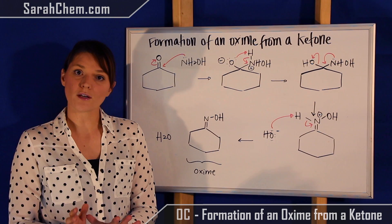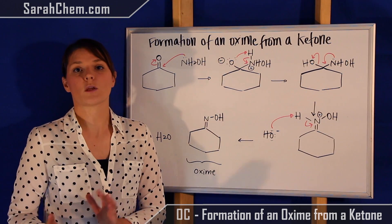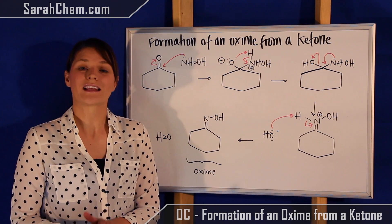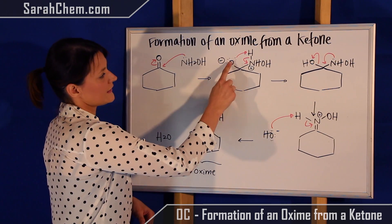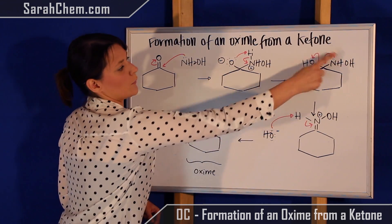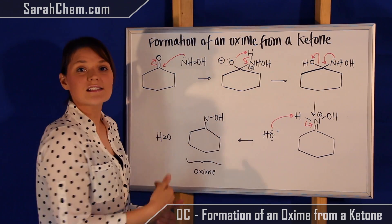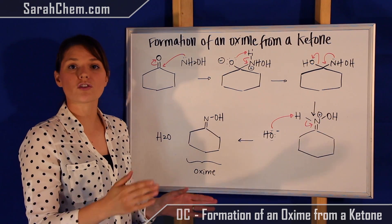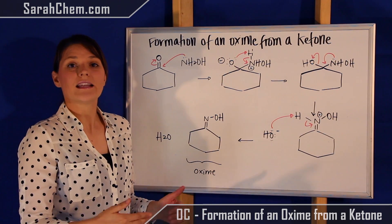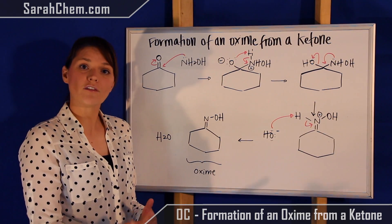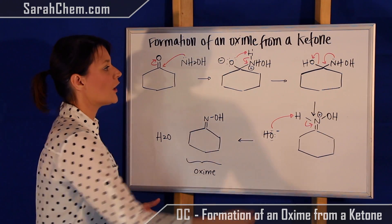When you protonate groups, you turn them into good leaving groups, which means that they'll be much easier to kick off in the long run. So what we're going to see is this proton transfer occurs, and we have this compound over here. Still a tetrahedral intermediate, but all the charges have been removed.